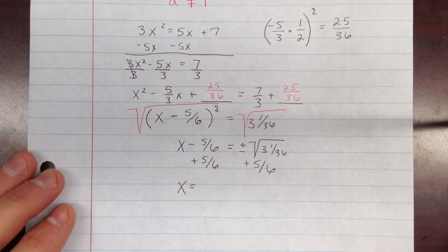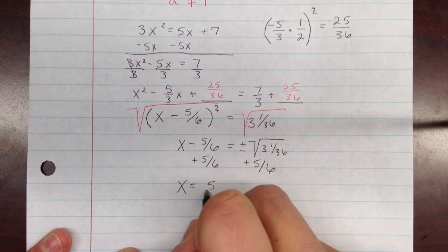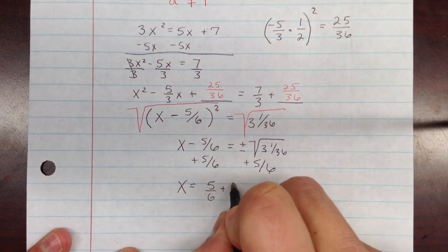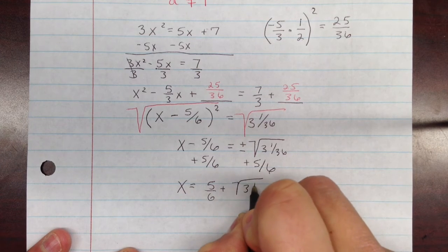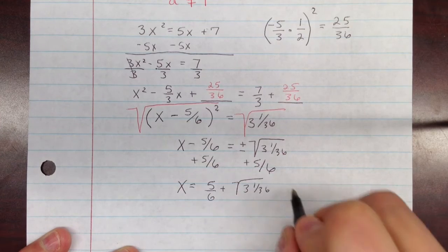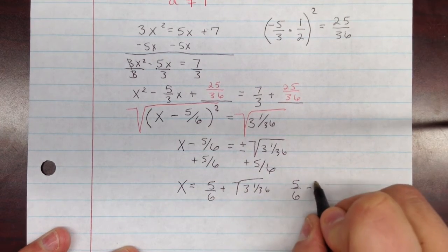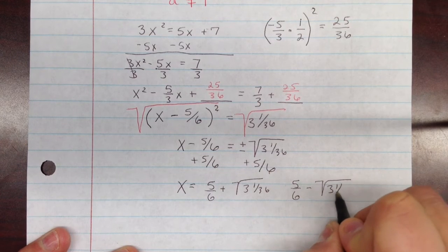And now our two answers are going to be, the first one's going to be 5/6. Start with the bottom number you have here. 5/6 plus the square root of 3 and 1/36. And the other answer is going to be 5/6 minus the square root of 3 and 1/36.